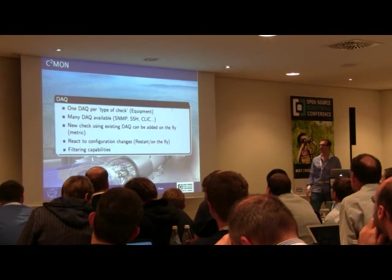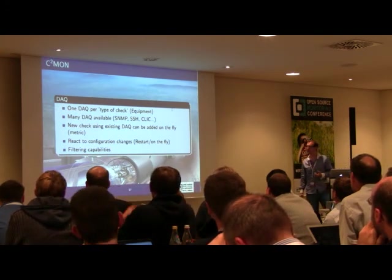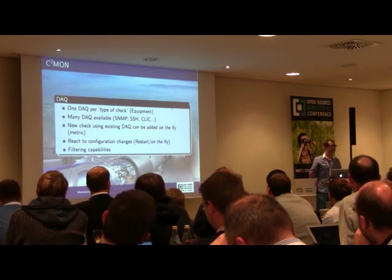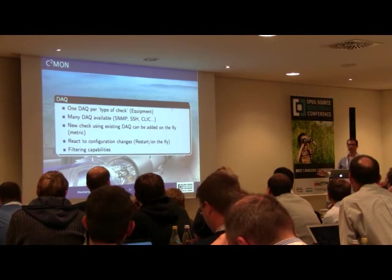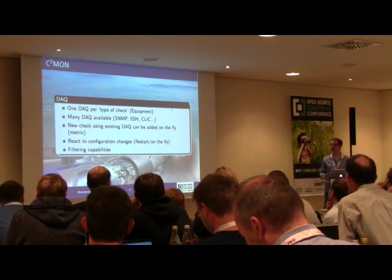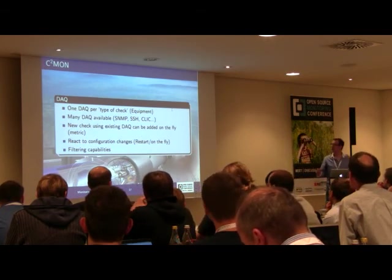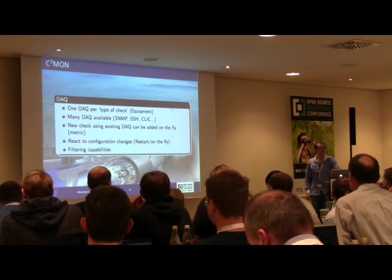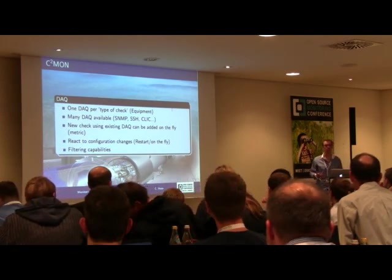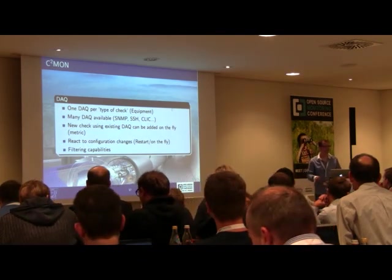The first layer is the DAC — Data Acquisition — which gathers the data. It can act as a poller or passively receive data. For each type of check, you have one dedicated DAC instance running for all your equipment. For example, all SNMP-based checks go through a dedicated DAC instance. This allows you to add a new measure with an existing DAC without perturbing the monitoring system at all — you can add a new check without stopping the production system, which is great for high availability. At this layer also happens all the filtering and smoothing so you don't fill the database with useless information.